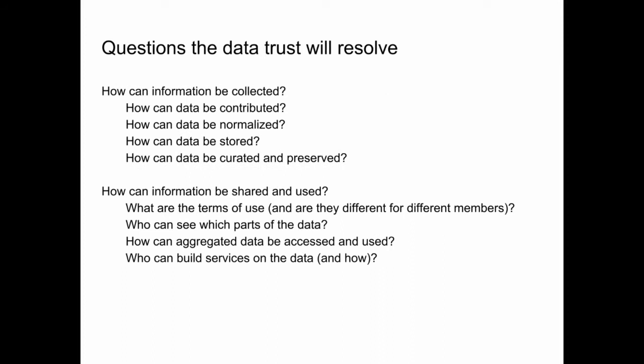The features of this data trust: it would be a repository of data about open access books and their use, with a well-documented framework of pathways and workflows for gathering that data. There's an organization behind this repository that has legal responsibility for the data — we want it to be a community or member-governed entity, empowering multiple stakeholders with responsible oversight. It also performs a standards-making role, ensuring fair and equitable access, and could act essentially as a laboratory around questions of data ethics. Key questions include: how can information be collected, normalized, stored, curated, and preserved? What are the terms of use — the same for all members or varying? Who can see which parts of the data, and who is allowed to build services on top of it?